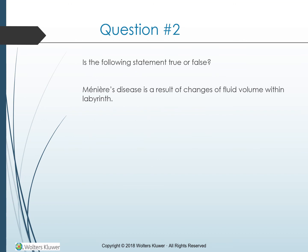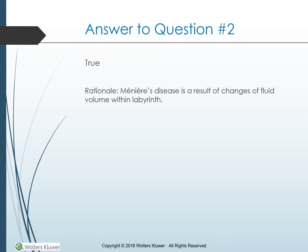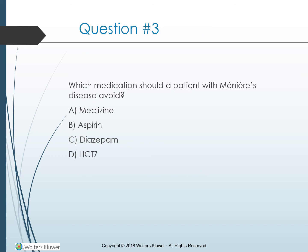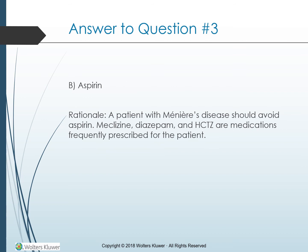Review question: Is the following statement true or false? Meniere's disease is a result of changes of fluid volume within the labyrinth. True — Meniere's disease is a result of changes of fluid volume within the labyrinth. Which medications should a patient with Meniere's disease avoid? Options: Meclizine, aspirin, diazepam, or hydrochlorothiazide. The answer is aspirin. A patient with Meniere's disease should avoid aspirin. Meclizine, diazepam, and hydrochlorothiazide are medications frequently prescribed for the patient.